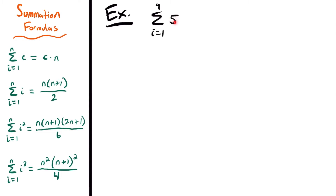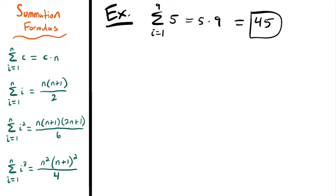In this case, our constant is 5 and our upper bound is 9, so the answer to this sum will be 5 times 9 — our constant times our upper bound — which is equal to 45. Just to compare, if we didn't know these formulas, this means we're adding 5 to itself 9 times: 5 plus 5 plus 5 and so on until we get to our ninth 5. Nine fives together would be 45.